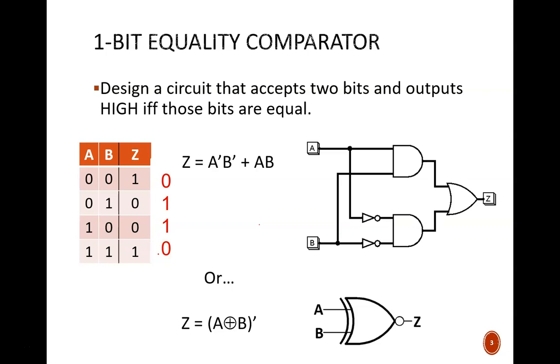We could write the boolean equation like this and we could draw the logic circuit as a single gate. In summary, a two-input exclusive NOR gate can be interpreted as a one-bit equality comparator.